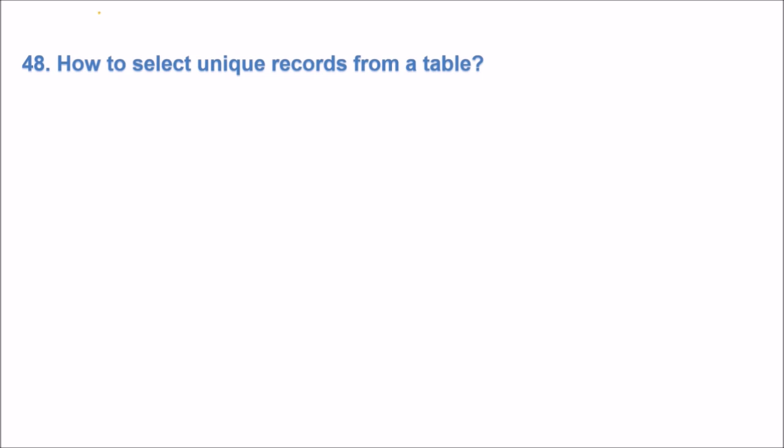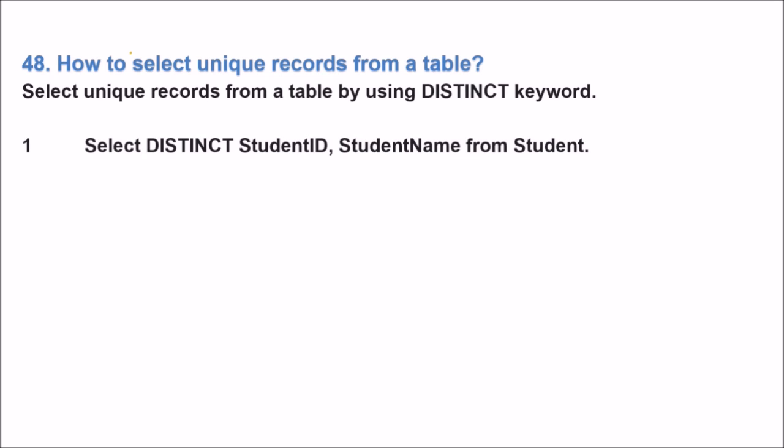How to select unique records from a table? If you want to select unique you use the DISTINCT keyword. So selecting unique records from a table by using distinct keyword. So SELECT DISTINCT id column FROM student.